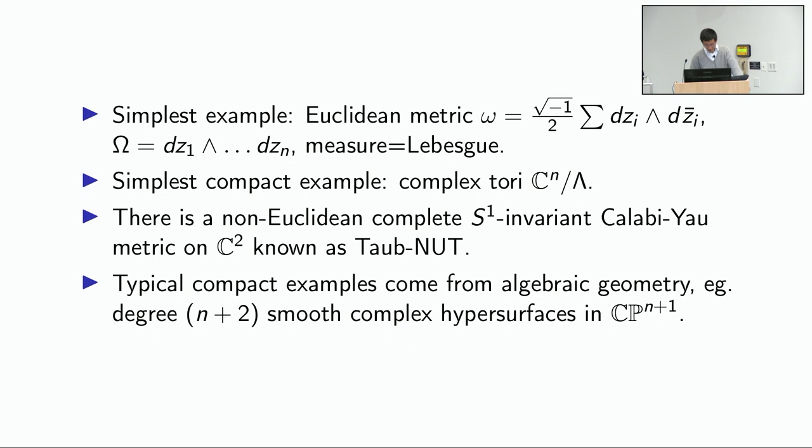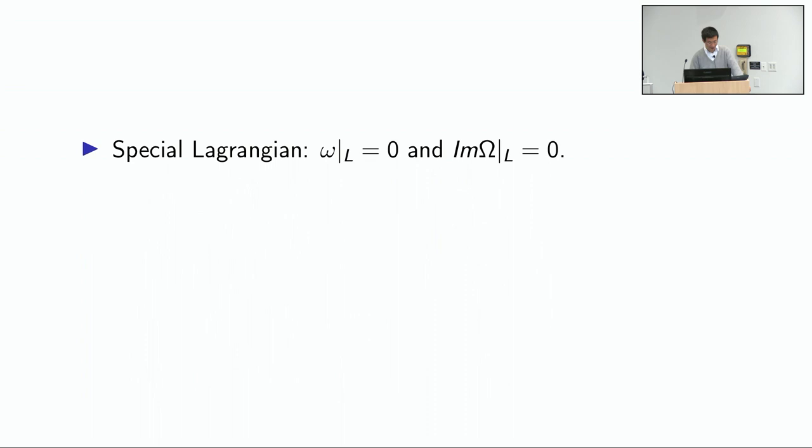Typical examples come from algebraic geometry. For instance, if you take a degree-(n+2) complex hypersurface inside the ambient projective space of one dimension higher, you get an n-dimensional Calabi-Yau manifold. Algebraic geometrically it's easy to come up with examples, but metrically it's hard to understand what's going on.